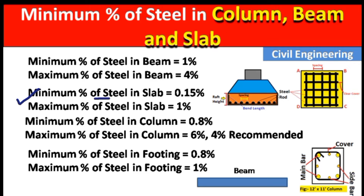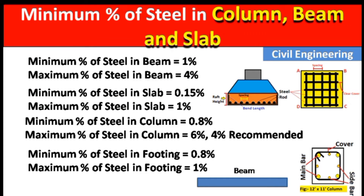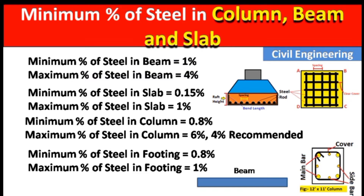The minimum percentage of steel in a slab should be 0.15 percent. For example, looking at this slab cross-section, 0.15 percent of the cross-sectional area of the slab should be covered by steel. Similarly, when we talk about one percent for a beam, it refers to one percent of the cross-sectional area of the beam. The maximum percentage of steel in a slab is one percent.